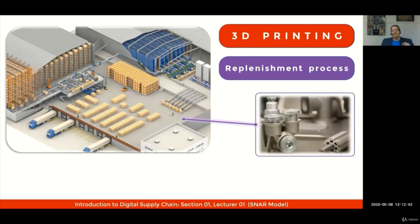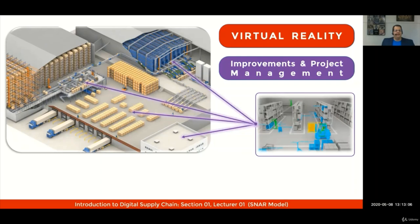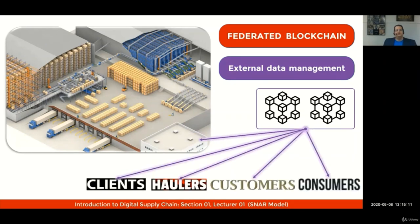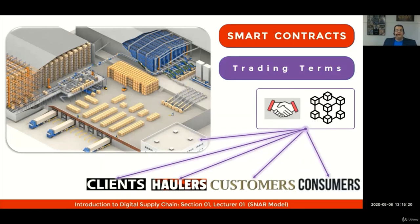You'll see how 3D printing may increase the speed of replenishment processes within a warehouse and help you avoid disruption of goods. We'll see how virtual reality applications will help you improve and manage projects within the warehouse. We will also learn how to use private blockchains to manage internal data and federated blockchain to manage external data with clients, haulers, customers, and consumers. We'll go through the concept of smart contracts and how trading terms will be managed in the context of blockchain.